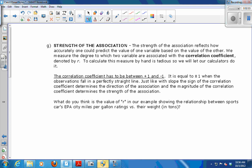And then we can talk about the strength of the association. So that reflects how accurately one could predict the value of one variable based on the other. So if I knew the weight of the car, to the tenth of a mile per gallon, could I predict how many miles per gallon that car is going to get? You know the weight, do you know exactly how many miles per gallon? No, but could you give me a range? Yeah.